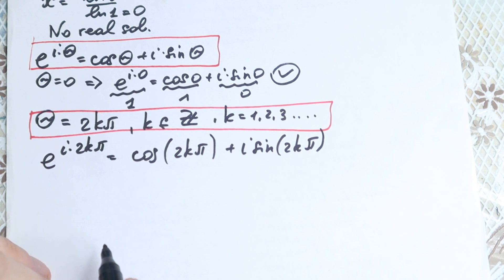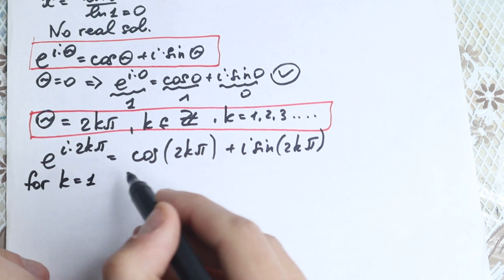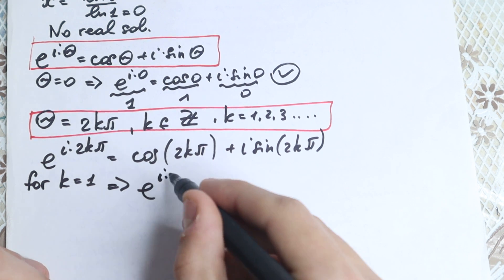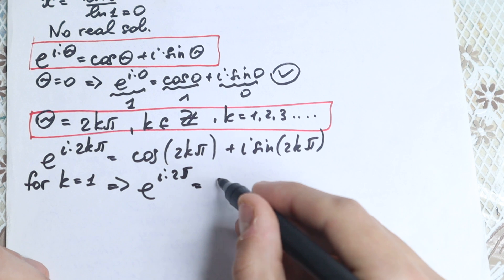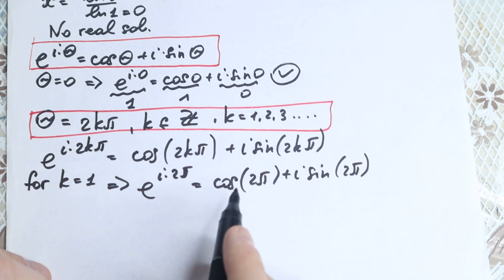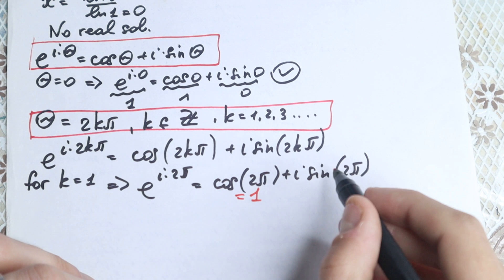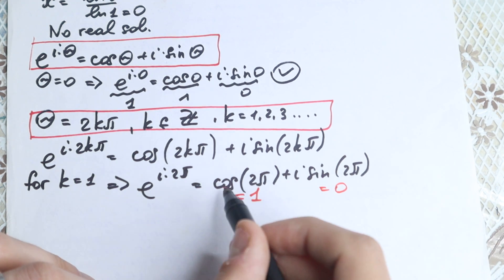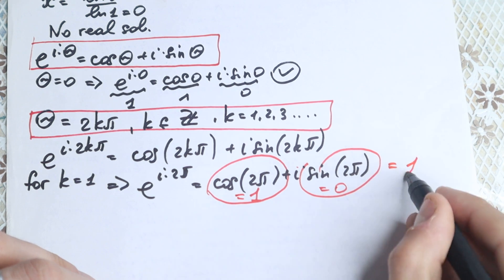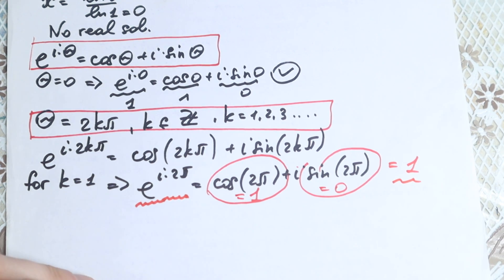Let's check special cases. For k equals 1, we get e to the power i times 2 pi equals cosine 2 pi plus i sine 2 pi. Cosine 2 pi equals 1 and sine 2 pi equals 0, so 1 plus 0 equals 1. So e to the power i times 2 pi gives us 1.